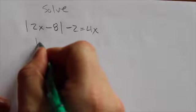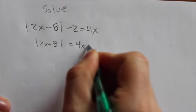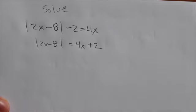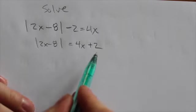The very first thing that we want to do is isolate the absolute value. Okay, so now we've got the absolute value of 2x minus 8 is equal to 4x plus 2.